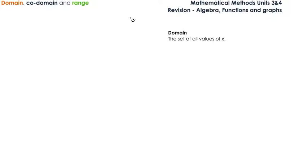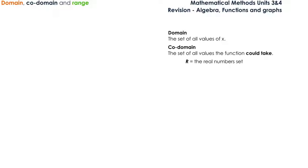In this video, we are going to look at the domain, codomain, and range of functions. The domain of a function represents the set of all values of x, while the codomain represents the set of all values the function could take. The codomain of a function is usually the real number set.